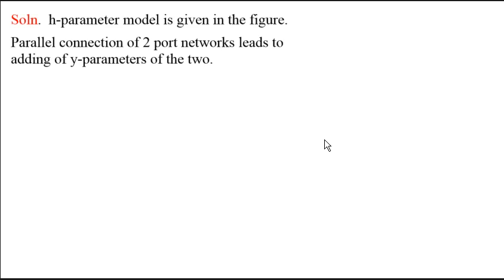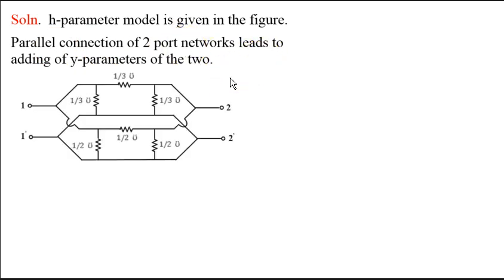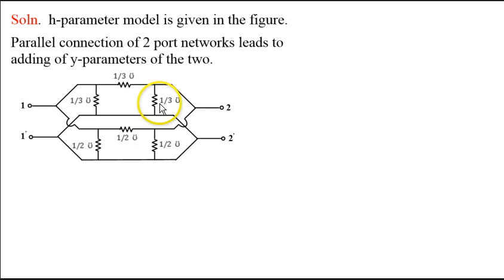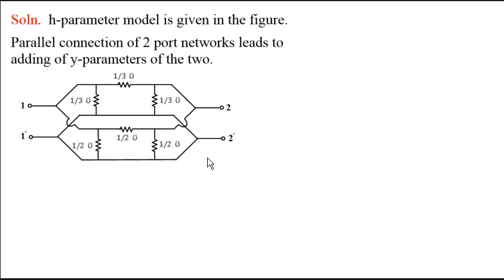By using admittance parameters, you can simplify it. The H parameter model is given, and parallel connection of two port networks leads to adding the Y parameters of the two networks. We have made a change: the three-ohm resistances have been converted into admittances of one-third Siemens each. So the two pi networks have values of 1/3, 1/3, 1/3 Siemens. Similarly, for the second pi network, the two-ohm resistances have been replaced by one-half Siemens admittances. The two pi sections are connected in shunt.